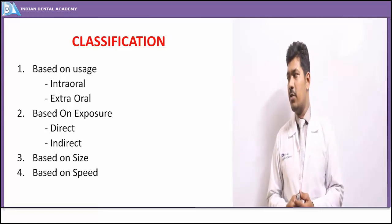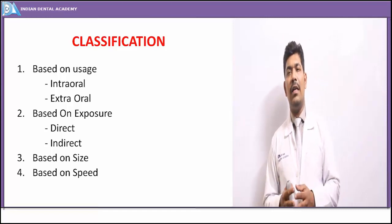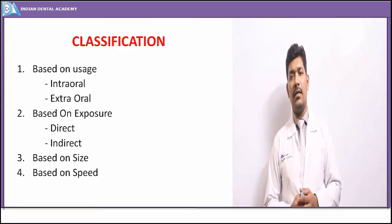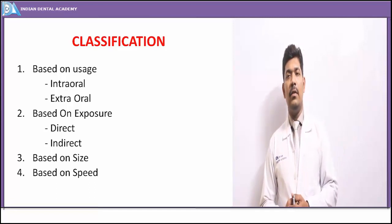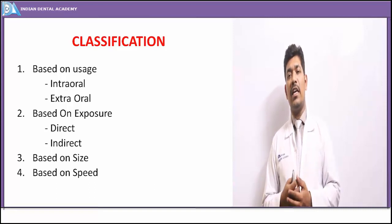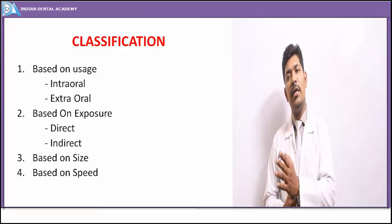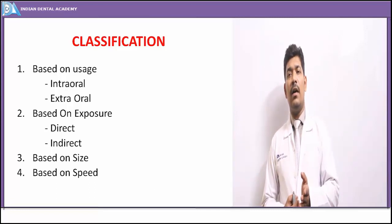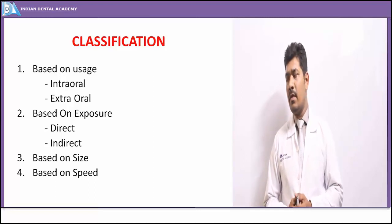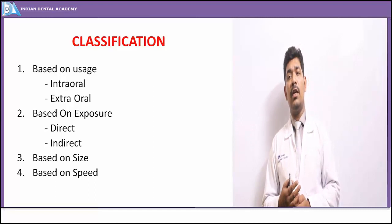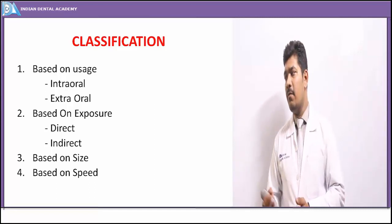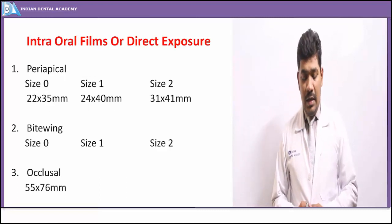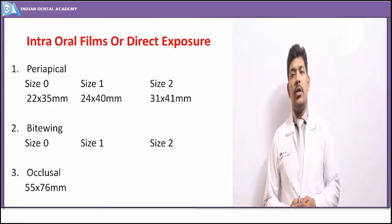Based on size, we have various films taken for specific purposes such as periapicals, bitewings, or occlusals. Based on speed, depending on the patient exposure you are trying to limit, the kilovoltage of the x-ray unit being used, and the size of the film, we can further classify the various image receptors according to speed.